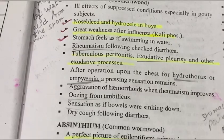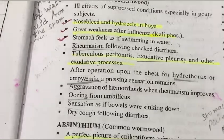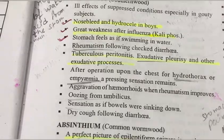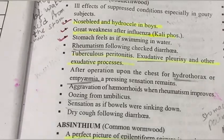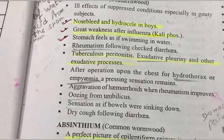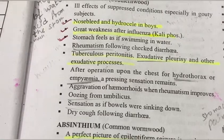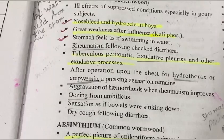Gouty rheumatism means pain, redness, and tenderness in the joints. The second symptom is nosebleed and hydrocele in boys. Hydrocele means swelling in the scrotum. In patients with both these symptoms, Abrotanum plays an effective role.